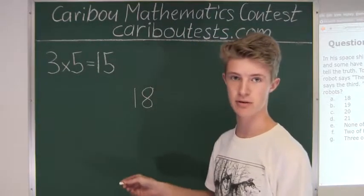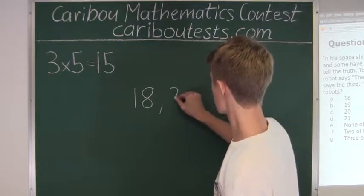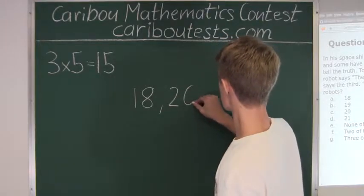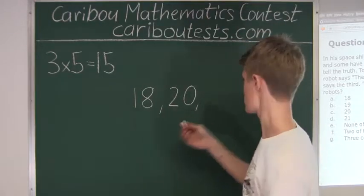then we have fifteen plus five, which is twenty, and fifteen plus seven, which is twenty-two.